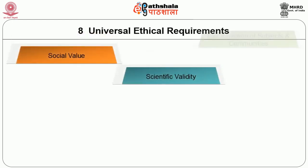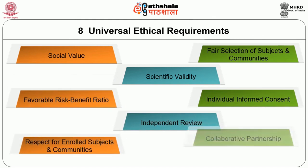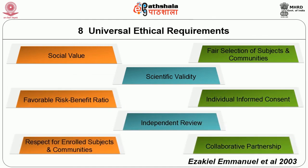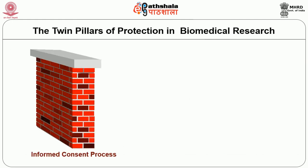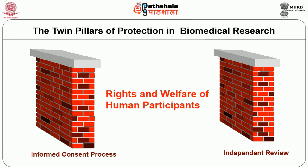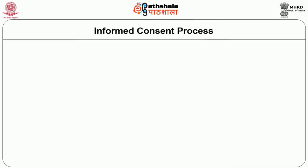The universal ethical requirements, released in 2003 by Ezekiel Emanuel from the National Institutes of Health USA, and well accepted worldwide, state that any study you plan should have: social value, scientific validity, fair selection of subjects and communities, favorable risk-benefit ratio, independent review, individual informed consent, respect for subjects and communities, and collaborative partnership. As for the twin pillars of protection in biomedical research, if you take care of two things you can say your study is ethically conducted: one is a good informed consent process, and the other is independent review by an ethics committee.